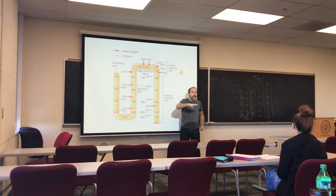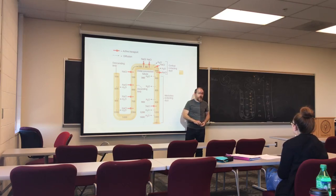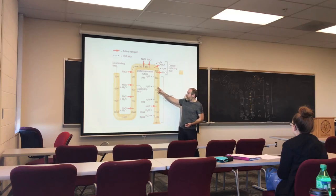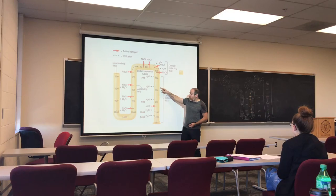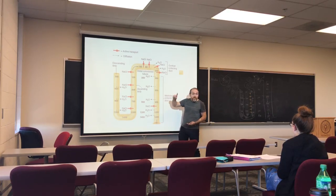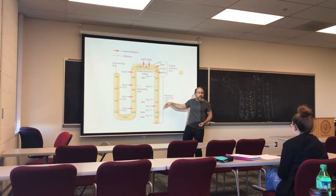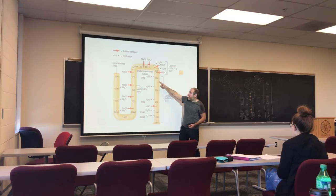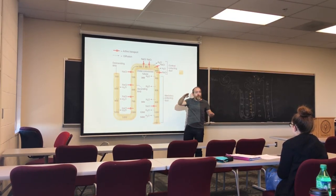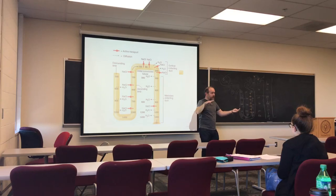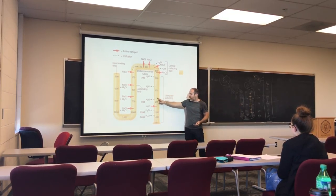This water movement in the collecting duct is regulated by ADH. If ADH is secreted, the collecting duct epithelium is more permeable to water and urine becomes concentrated. If ADH is not secreted, the epithelium is impermeable and urine exits at approximately 300 milliosmoles. You can control how much water is recovered depending on the degree of ADH secretion.